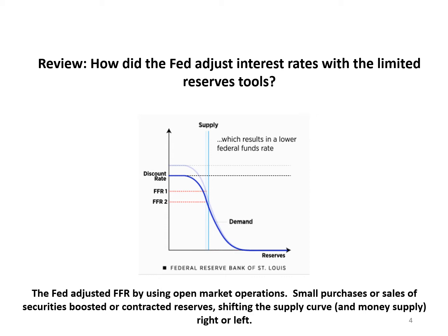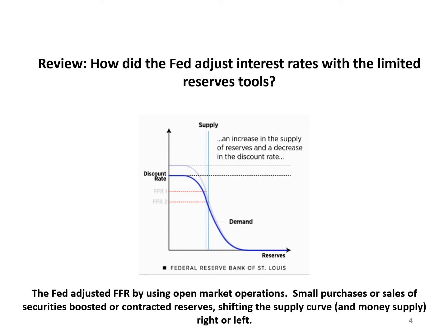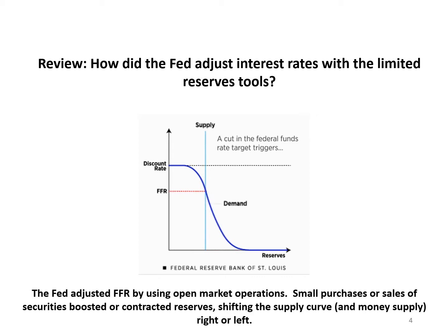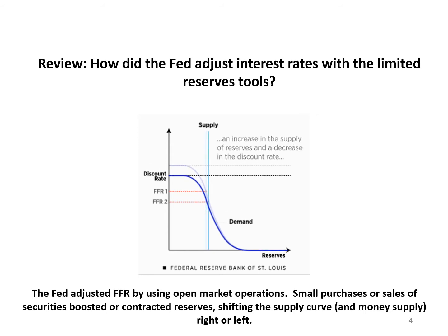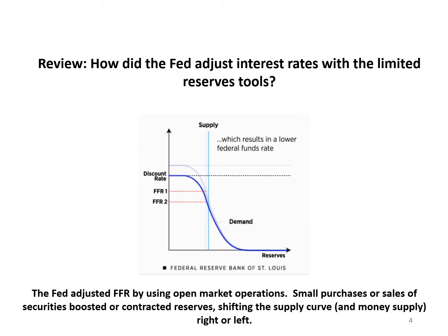The Fed controlled the total supply of reserves and influenced that supply using open market operations. For example, when the Fed wanted to lower the federal funds rate, it would do an open market purchase of government securities that shifted the supply curve to the right, as the Fed credited the account of the seller of the security. A relatively small rightward shift of the supply curve would result in a lower federal funds rate. Because reserves were limited, the supply curve intersected the downward sloping portion of the demand curve. The Fed could fine-tune the federal funds rate using very small adjustments of the supply of reserves, making these adjustments daily to keep the federal funds rate near the target set by the Federal Open Market Committee.